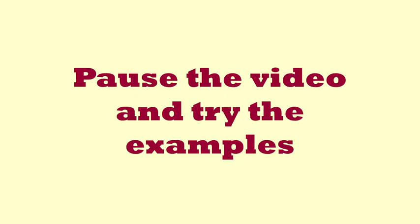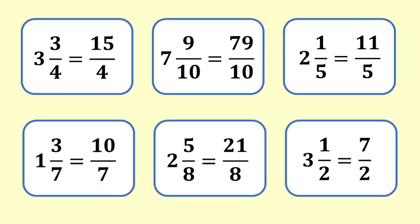I hope you paused. Here are the answers. 3 and 3 quarters is equal to 15 quarters. 7 and 9 tenths is equal to 79 tenths, 2 and 1 fifths is equal to 11 fifths, 1 and 3 sevenths is equal to 10 sevenths, 2 and 5 eighths is equal to 21 eighths, 3 and a half is equal to 7 halves.